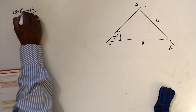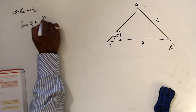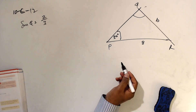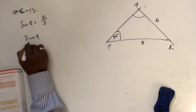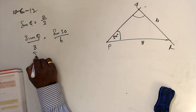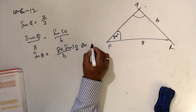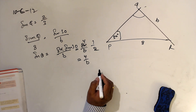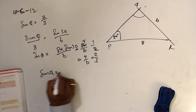Number 12: we want to show sin Q = 2/3. Given two sides and one angle, we use the sine rule: sinQ/8 = sin30°/6. So sinQ = 8·sin30°/6 = 8·(1/2)/6 = 4/6 = 2/3. Hence sin Q = 2/3.